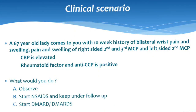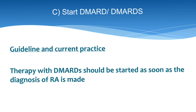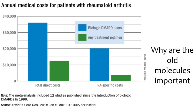Clinical scenario: a 67-year-old lady presents with a 10-week history of bilateral wrist pain and swelling, swelling of right-sided second and third MCP and left-sided second MCP; CRP is elevated; rheumatoid factor and anti-CCP are positive. The options are: observe, start NSAIDs and follow up, or start DMARDs. Obviously, we start DMARD therapy as soon as the diagnosis of RA is made. Annual medical costs for rheumatoid arthritis patients are very high when biologic DMARDs are used — which is why conventional molecules remain very important.